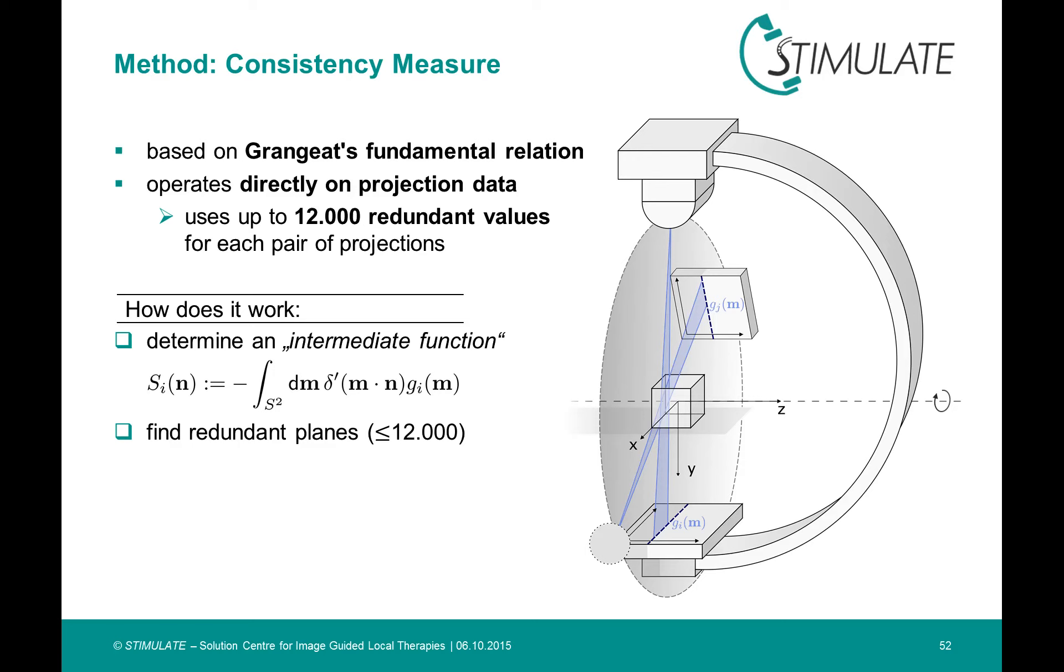These are usable for a comparison. Such a plane has only two constraints. It has to contain the source positions, and naturally, it has to intersect with the detector areas.